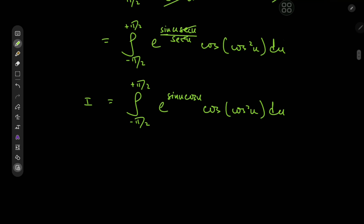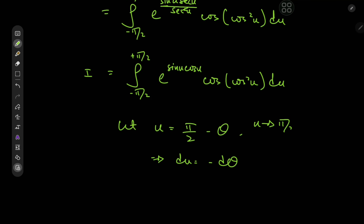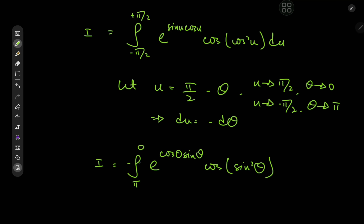By virtue of symmetry, a transformation here would be quite welcome. Let u equal π/2 minus θ, which implies du equals negative dθ. As u approaches π/2, θ approaches 0 as the upper limit, and as u approaches negative π/2, θ approaches π. So i is now the integral from π to 0 of e to the sine of (π/2 minus θ), which is the cosine of θ.